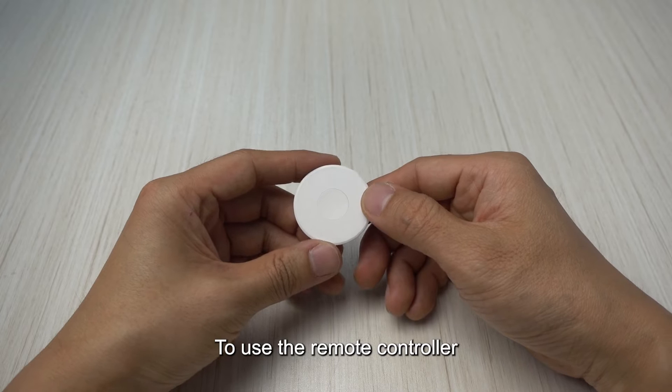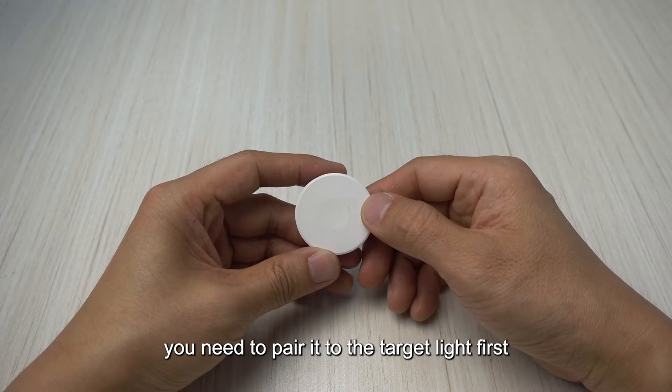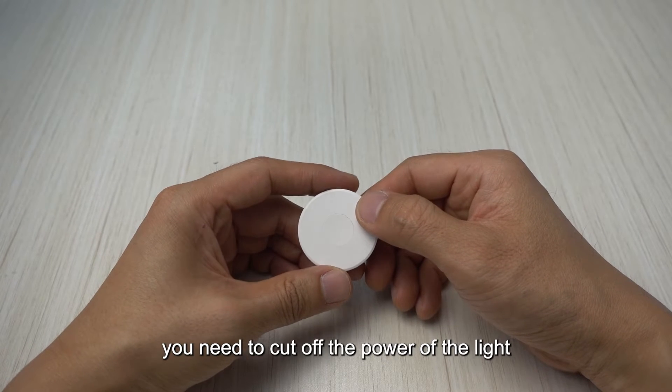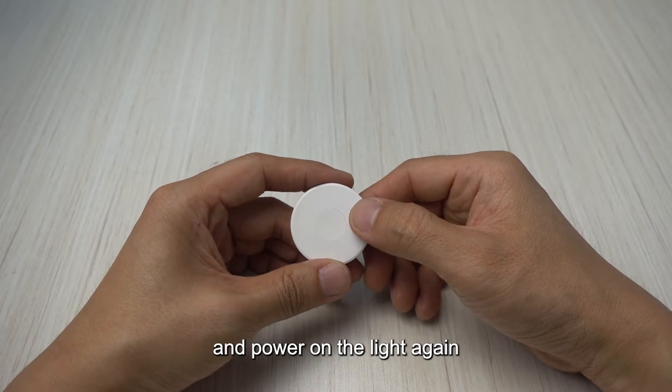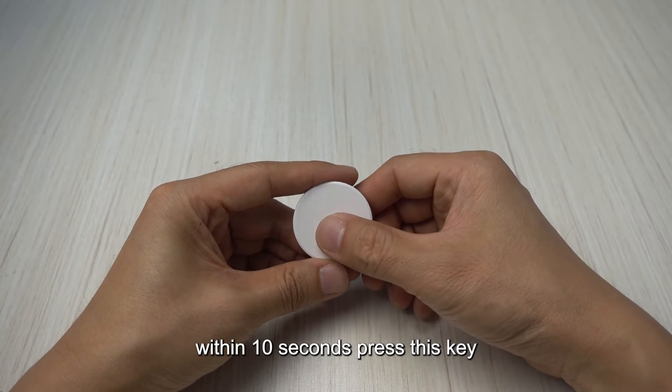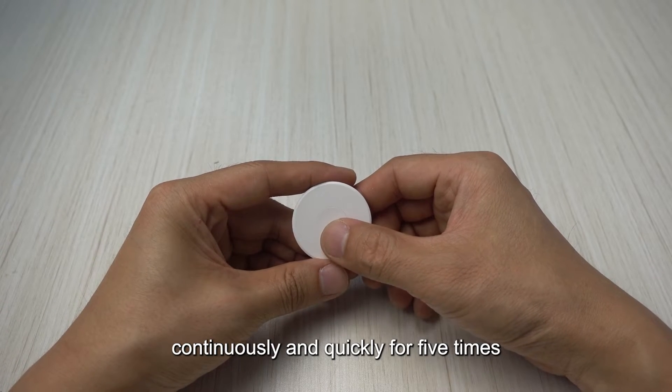To use the remote controller you need to pair it to the target light first. To pair it to the target light you need to cut off the power of the light and power on the light again and within 10 seconds press this key continuously and quickly for five times.